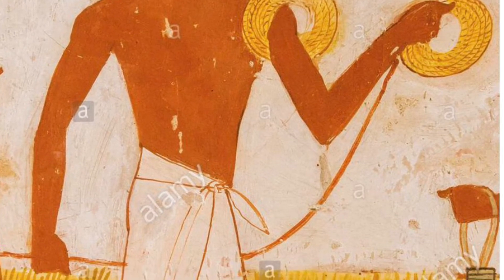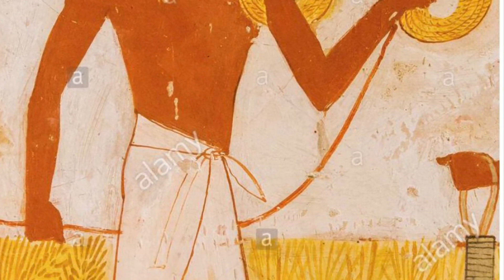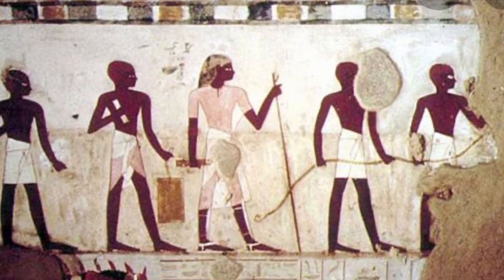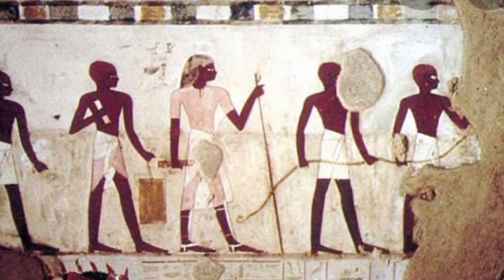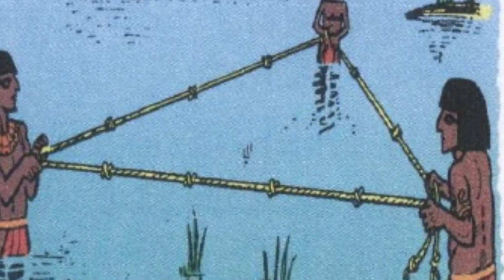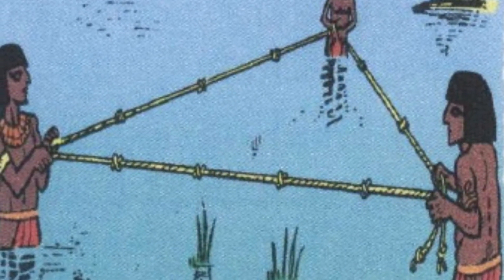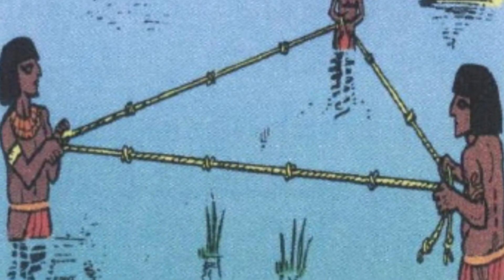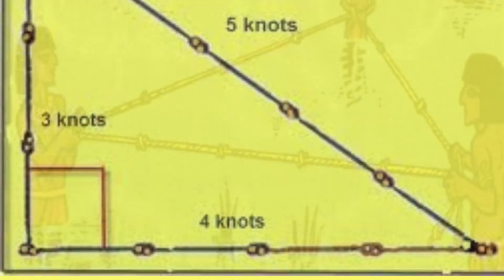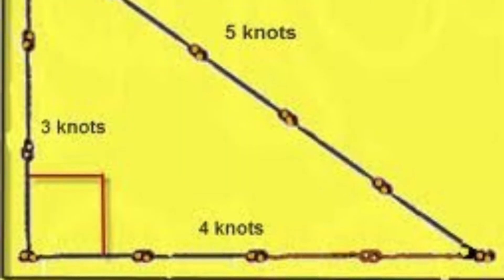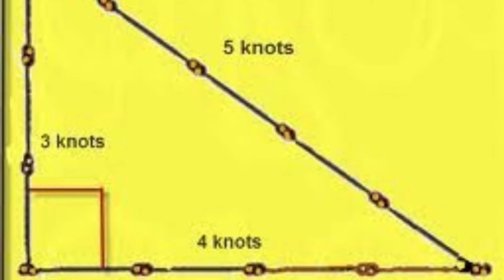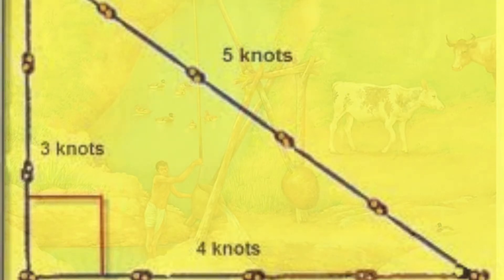These people were called the Harbonadapta. It is a Greek word and it means the rope stretchers. And this is exactly what they did — they stretched ropes according to a pattern. The ropes they used were knotted at regular intervals. The Harbonadapta stretched the rope out into a triangular shape.